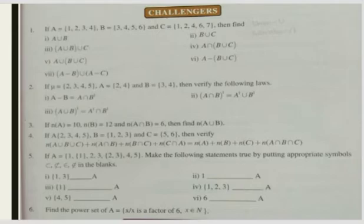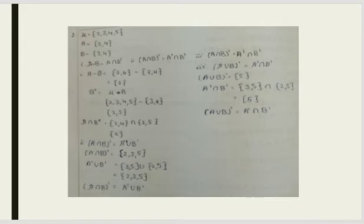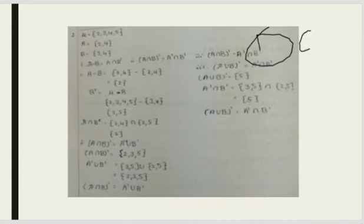Now we solve the second question. μ = {2,3,4,5}, A = {2,4}, and B = {3,4}. We need to verify the following set laws — there are five laws. The first equation is A - B = A∩B'. That dash symbol represents the complement. We need to solve A minus B first, then find B complement, to verify the law easily.